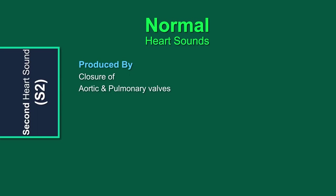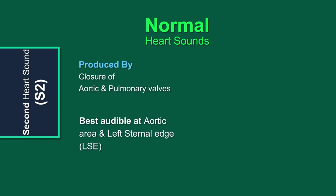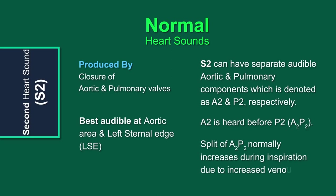The second heart sound, S2, is produced by the closure of the aortic and pulmonary valves and is best heard in the aortic area as well as the left sternal border. S2 is normally split into two separate audible components, A2 and P2. A2 is produced by aortic valve closure, while P2 is by closure of the pulmonary valve. The aortic valve normally closes before the pulmonary valve, so we denote this normal split as A2P2. During inspiration, increased venous return to the right side slightly delays right ventricular emptying, increasing the splitting duration of S2. By contrast, splitting decreases or vanishes during expiration. This is the physiological splitting.